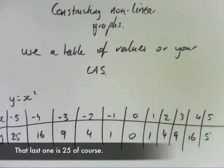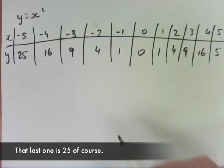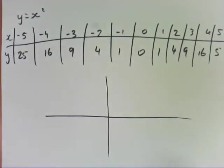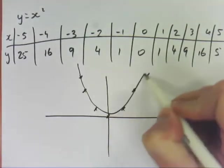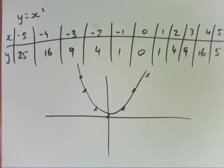And then, using that table of values, you draw your graph. And of course, you'll do it on graph paper and you'll do everything right. But essentially, it will look like that. So use a table of values. Use your CAS calculator.